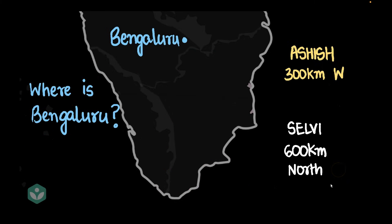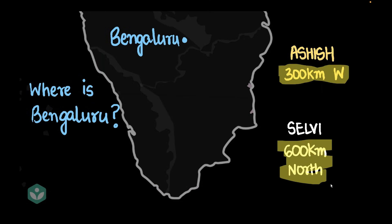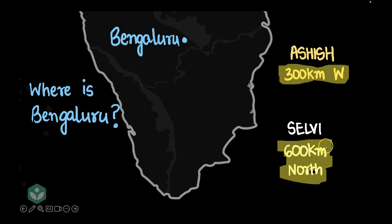Let's get back to the original question: where is Bengaluru? What if I just said '300 kilometers west' or '600 kilometers north' without telling you whose perspective I was speaking from, or what reference point I was using? Those statements would be meaningless. To describe the position of Bengaluru, I need to tell you what reference point I'm talking from.